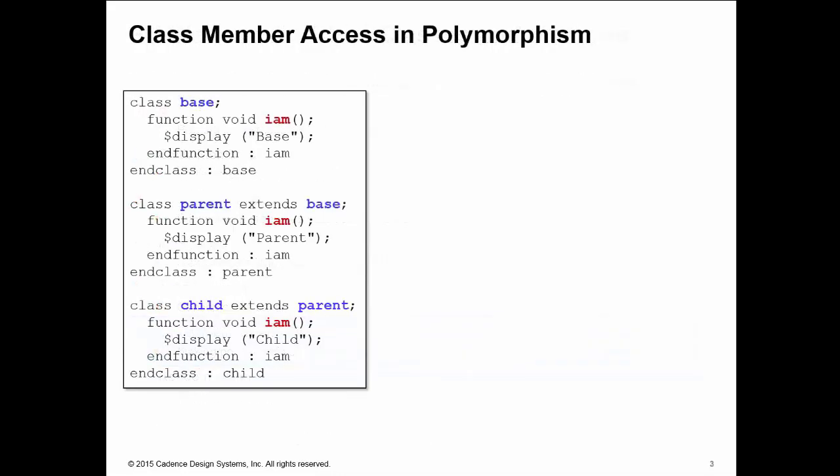In this example, I have three classes: base, parent — which is a subclass of base — and child, which is a subclass of parent. All three have the implementation of a simple method, 'I am', which tells us which type they are.